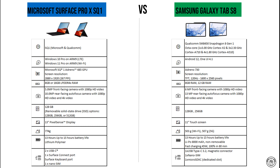For connectivity, the Surface Pro X SQ1 features two USB connectors, one Surface Connect port, one Surface cable port, and one nano SIM slot. The Samsung Galaxy Tab S8 has one USB Type-C 3.0 port with a magnetic connector, one nano SIM slot, and one dedicated micro SDXC slot.